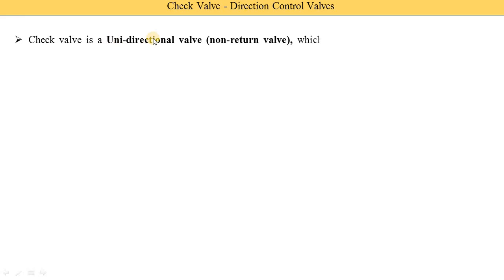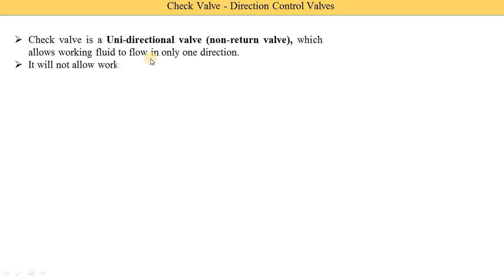A check valve is a unidirectional valve. Unidirectional means it controls the flow in one direction only. It is also known as a non-return valve, which allows the working fluid to flow in only one direction from the check valve. It will not allow the working fluid to flow in the other direction. That's why it is called a unidirectional valve or non-return valve.